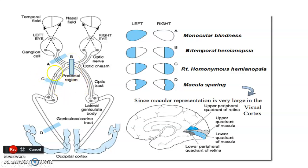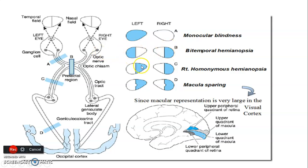Lesion C is injury to the optic tract. The nasal fibers decussate and cross here, carrying information from the contralateral temporal visual field, while the temporal fibers carry information from the ipsilateral nasal visual field. So you are affecting nasal on one side and temporal on the other — essentially an entire half visual field. This gives you right homonymous hemianopia, because both nasal and temporal portions of the right visual field are affected.